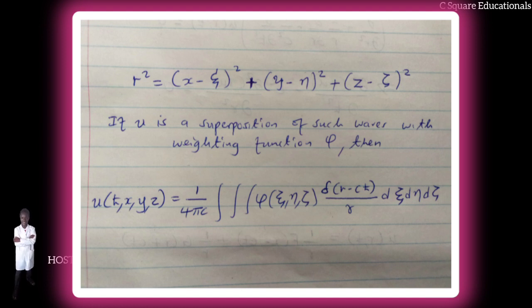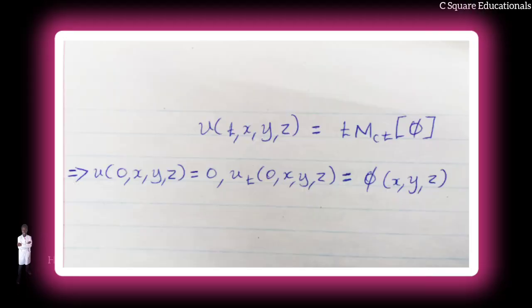on the unit sphere S, and ω is the area element on S. This result has the interpretation that u(t,x) is t times the mean value of φ on a sphere of radius ct centered at x, as shown.